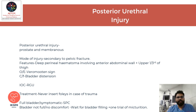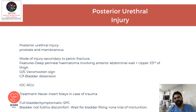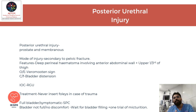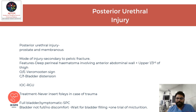In posterior urethral injury, the most common sites involved are the prostatic and membranous urethra. The mechanism of injury is most commonly secondary to pelvic fractures. The cardinal feature is the deep perineal hematoma involving the anterior abdominal wall and the upper one-third of the thigh. On examination, we can see a high-riding prostate or floating prostate on deep rectal examination. The patient may also present with bladder distension.